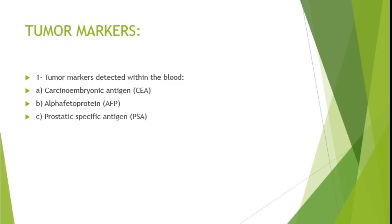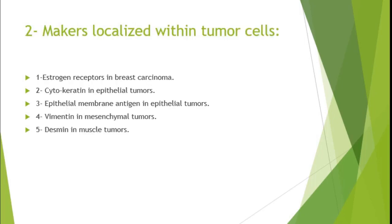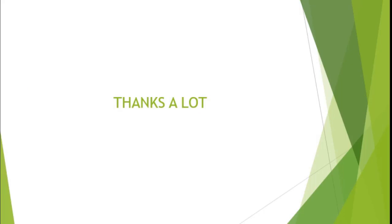More specific markers are localized within tumor cells: estrogen receptors in breast carcinoma, cytokeratin in epithelial tumors, epithelial membrane antigen (EMA) also in epithelial tumors, vimentin in mesenchymal or connective tissue tumors, and desmin in muscle tumors.